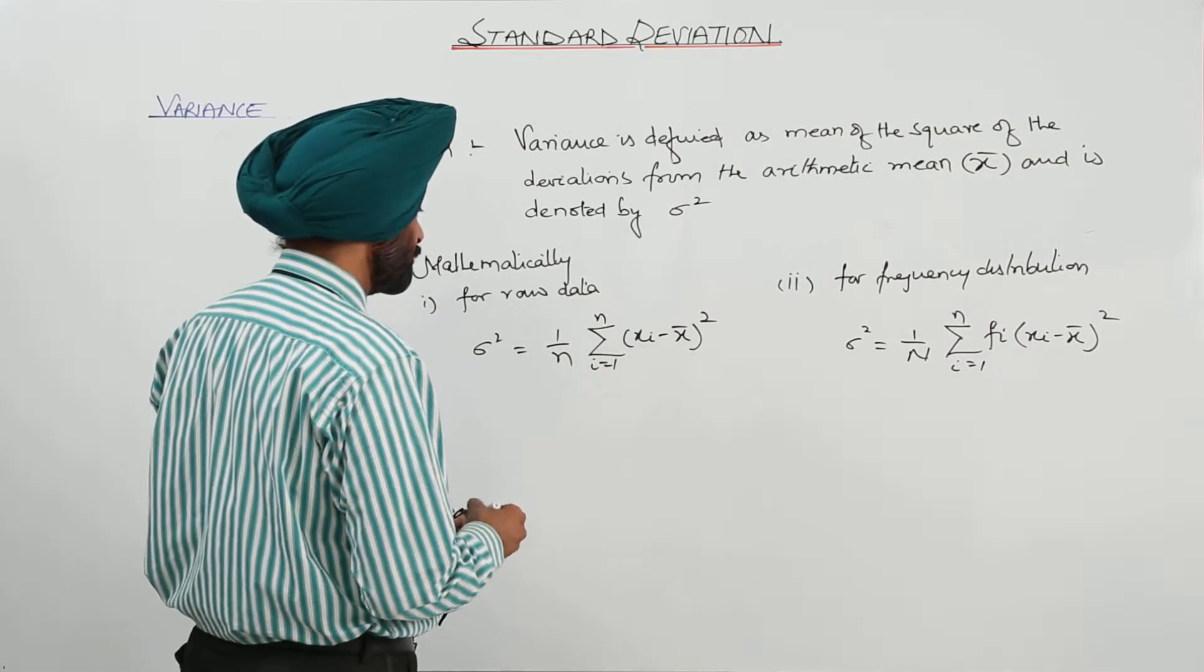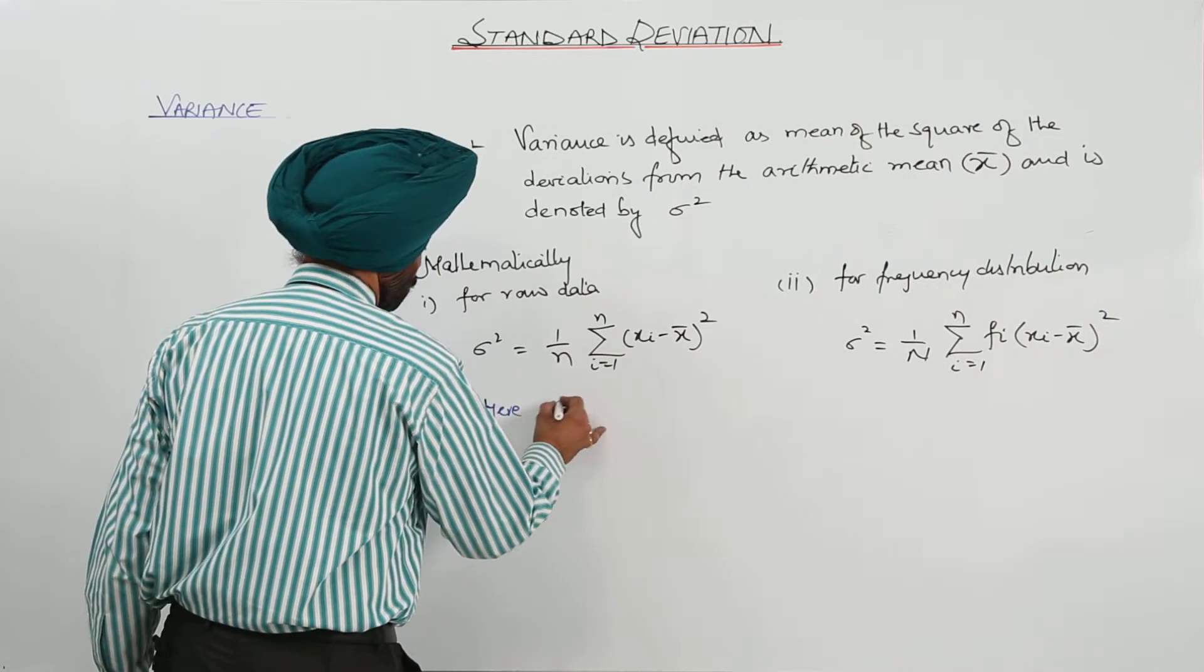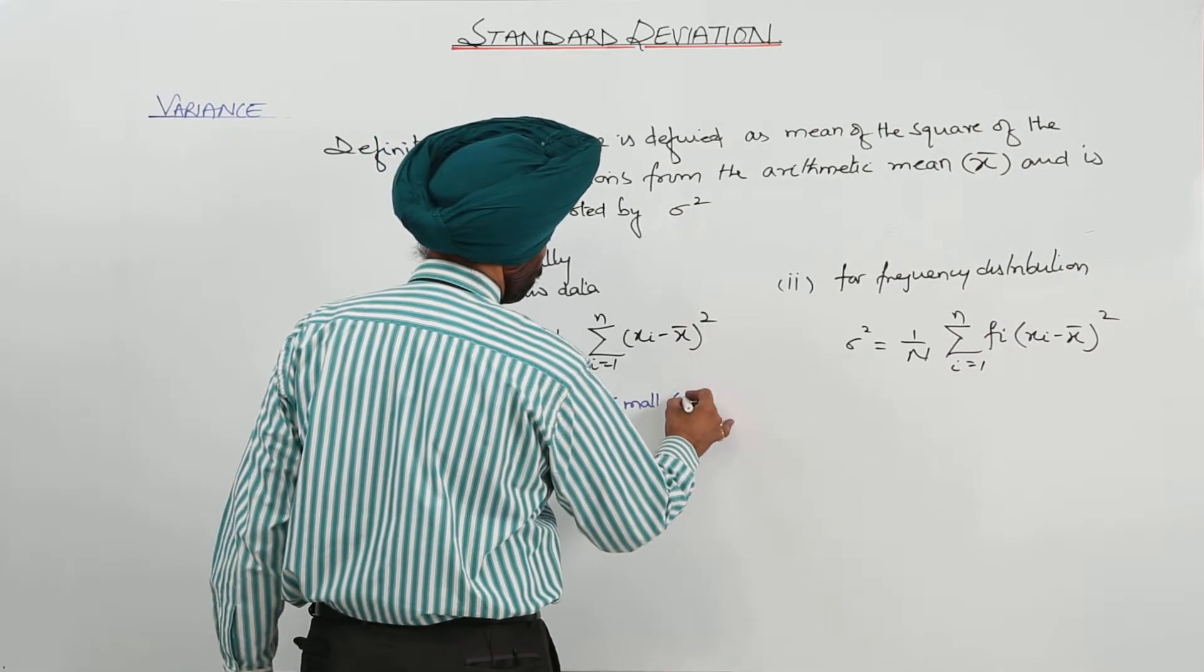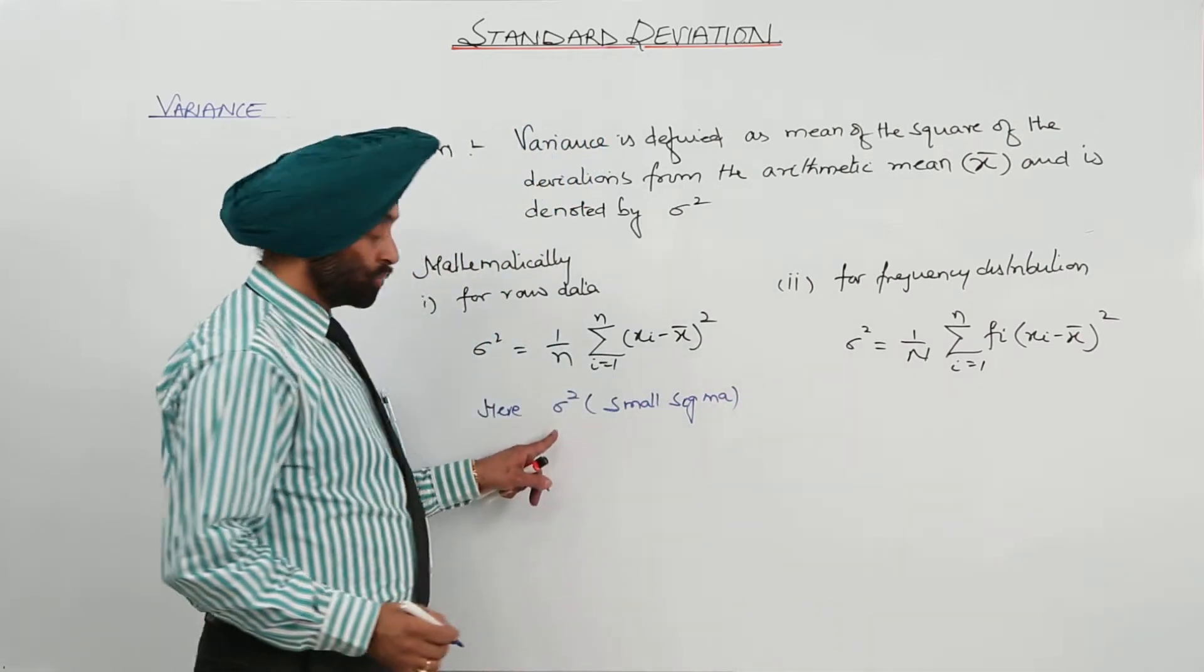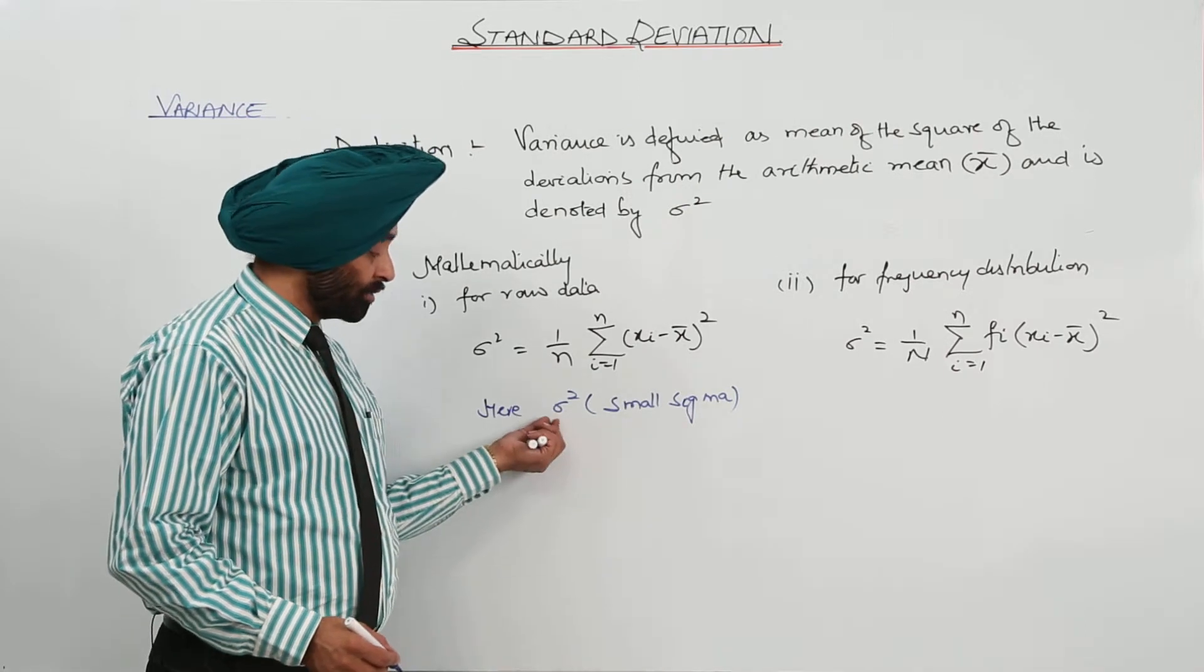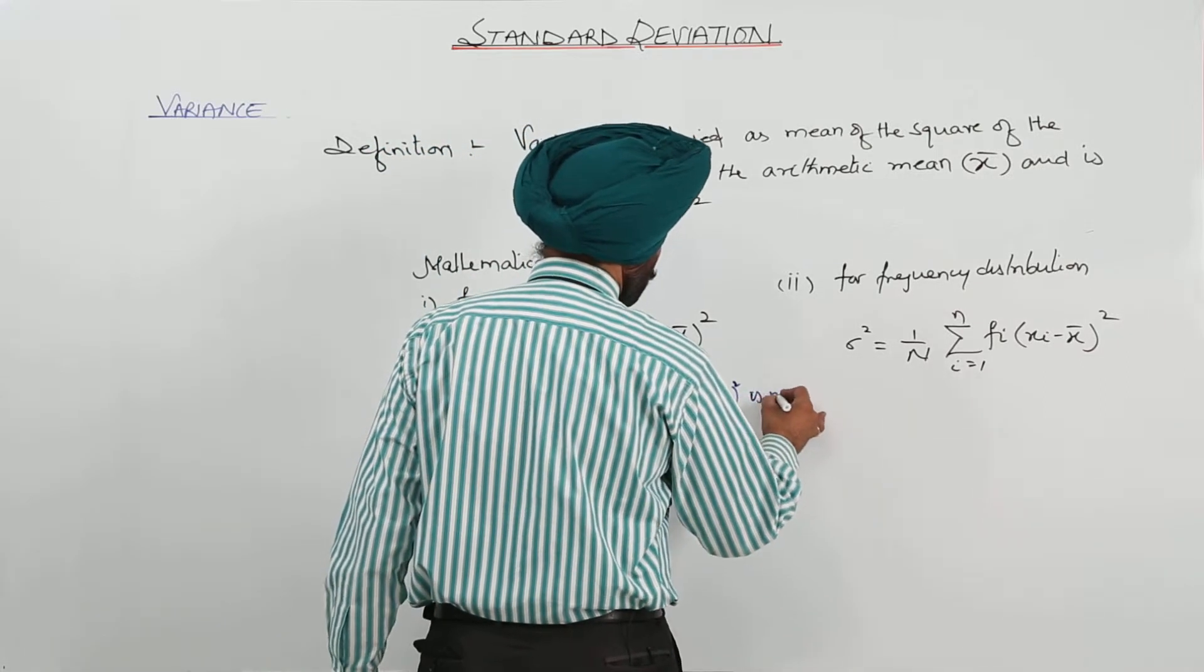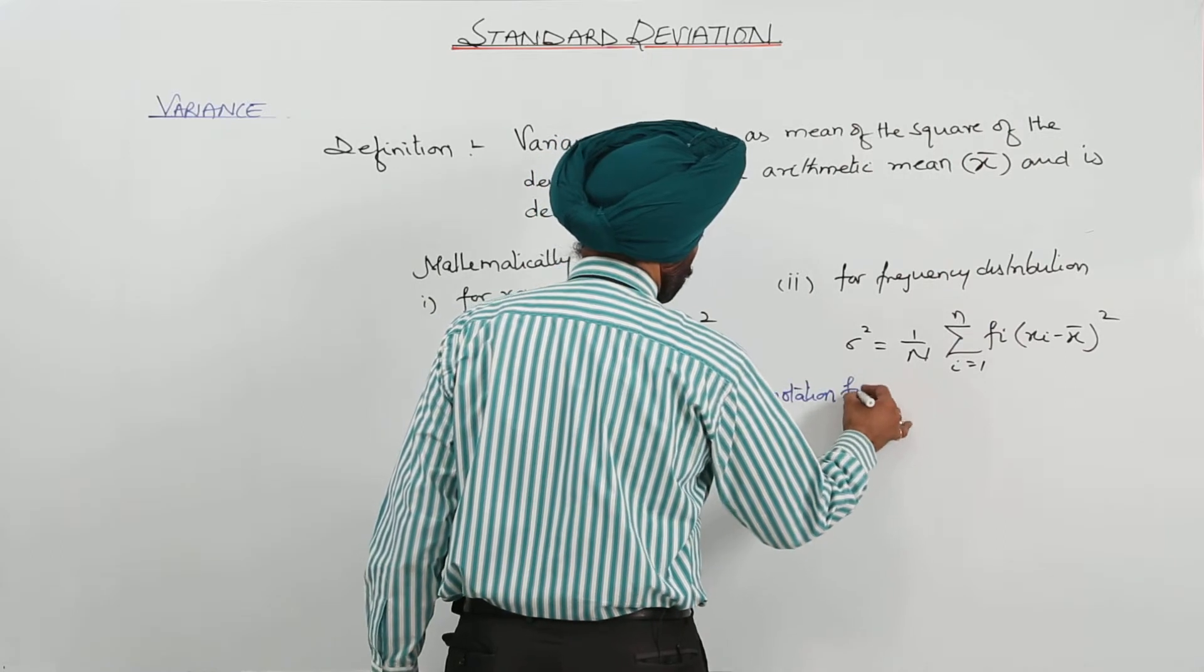Now here we can just write it. Small sigma, square of a small sigma. I am just writing small sigma only for this symbol. Or we can write it here, small sigma square. Small sigma square is notation for variance.